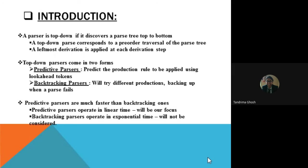Discussion on top-down parsers: a top-down parser constructs the parse tree starting from the root and going down to the leaf. Top-down parsers come in two forms: predictive parsers and backtracking parsers. Predictive parsers predict the production rule to be applied using look-ahead tokens; backtracking parsers try different productions backing up when parsing fails. Predictive parsers operate in linear time; backtracking parsers operate in exponential time.